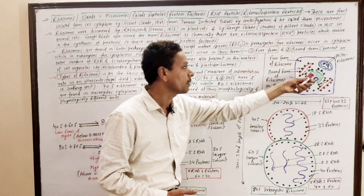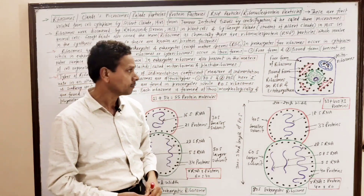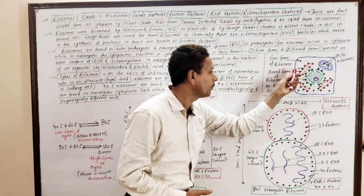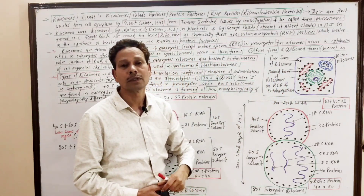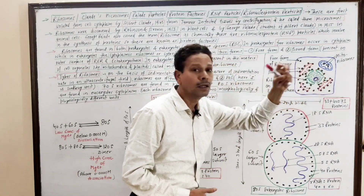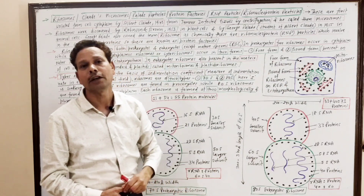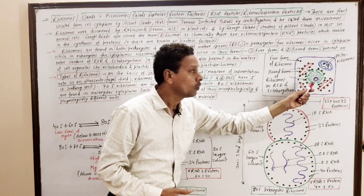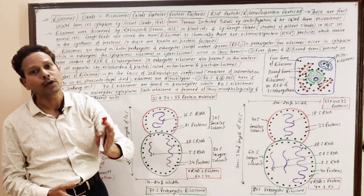In eukaryotic cells, ribosomes in the cytoplasm occur in two forms: either in free form, or in bound form — meaning they associate on the outer surface of rough endoplasmic reticulum, as well as on the outer coat of the nuclear envelope (ectokaryotheca). So in eukaryotes, ribosomes may be free in the cytoplasm or found in association with the rough endoplasmic reticulum and the outer coat of the nucleus.